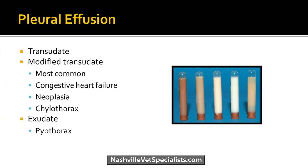Effusions are classified by protein count and cell count. Transudates are rare as a cause of pleural effusion, due to very low protein levels. Modified transudates are more common — in cats, congestive heart failure is one of the more common causes, along with cancer and chylothorax (milky white fluid). All three are quite common in cats. Exudates can also be seen; pyothorax is mostly seen in cats. Analyzing the fluid is useful when the cause of the effusion is unclear.